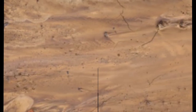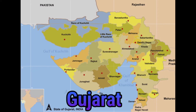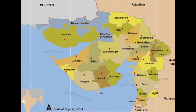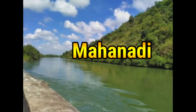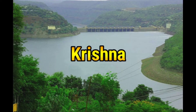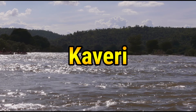These soils also extend in Rajasthan and Gujarat through a narrow corridor. Alluvial soil is also found in the eastern coastal plains, particularly in the deltas of the Mahanadi, Godavari, Krishna, and Kaveri rivers.